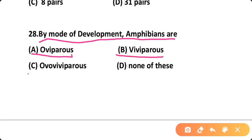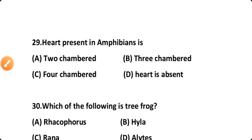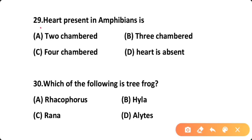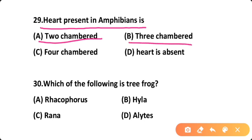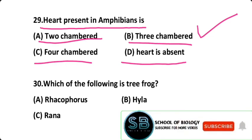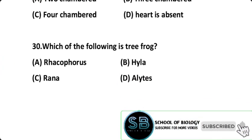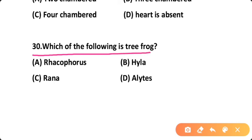Question twenty-eight: By mode of development, amphibians are — Option A: oviparous, Option B: viviparous, Option C: ovoviviparous, Option D: none of these. Question twenty-nine: The heart present in amphibians is — Option A: two-chambered, Option B: three-chambered, Option C: four-chambered, Option D: heart is absent. Correct answer is Option B — amphibians have a three-chambered heart.